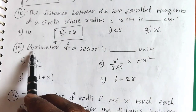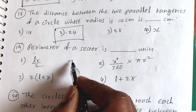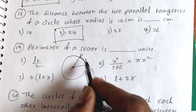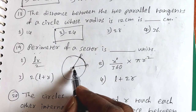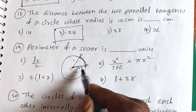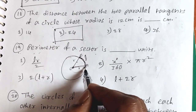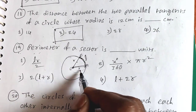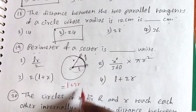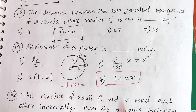Question 19: The perimeter of a sector is how many units? The sector OAB is a part of the circle. The perimeter of the sector consists of arc length L plus radius OA plus radius OB, which equals L plus R plus R. So the perimeter of a sector equals L plus 2R.